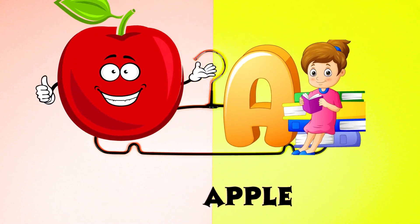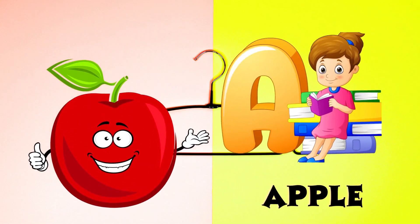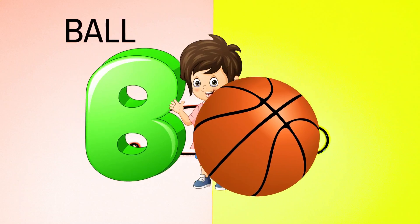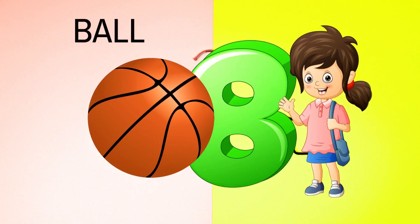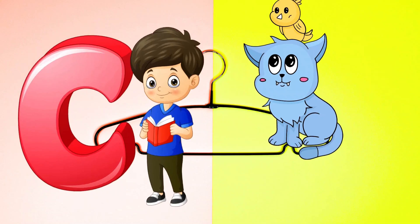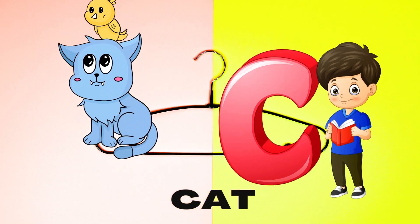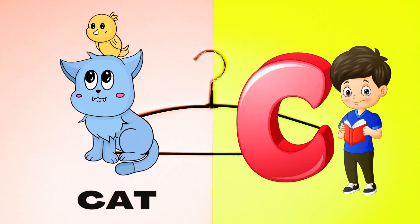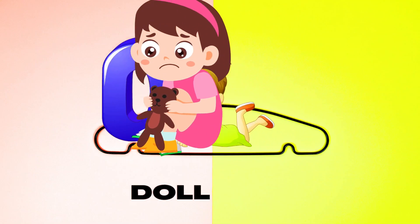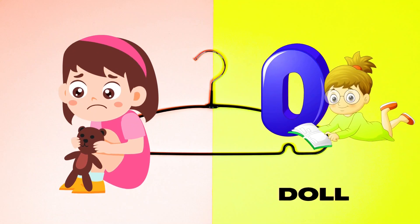A is for Apple, A-A-Apple. B is for Ball, B-B-Ball. C is for Cat, C-C-Cat. D is for Doll, D-D-Doll.